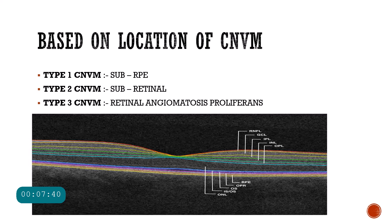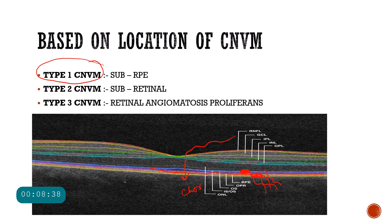Next, how do we classify the CNVM? The layers of the retina are very important for understanding the types of CNVM based on location. We have the retinal pigment epithelium, and below that the Bruch's membrane, and then the choroid. From the choroidal area the neovascular membrane grows through the RPE and can occupy different positions — either limiting itself below the RPE or crossing the RPE to occupy a position above it. Based on this we classify CNVM into three types. Type 1 CNVM is where the choroidal neovascular membrane grows but limits itself below the RPE — called sub-RPE CNVM.